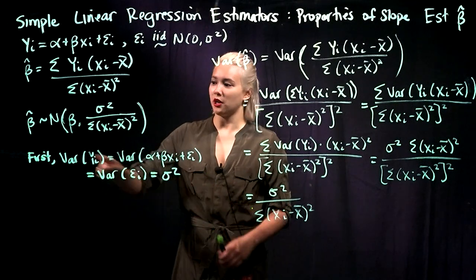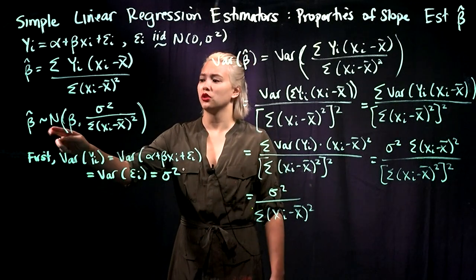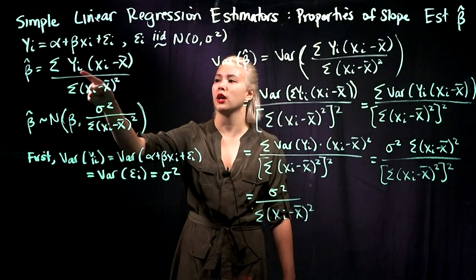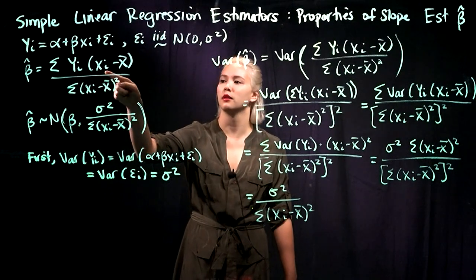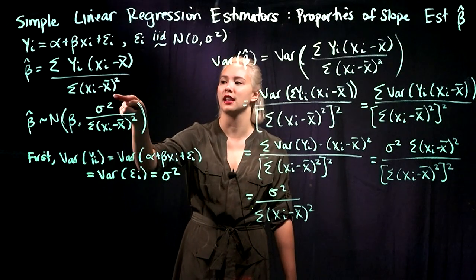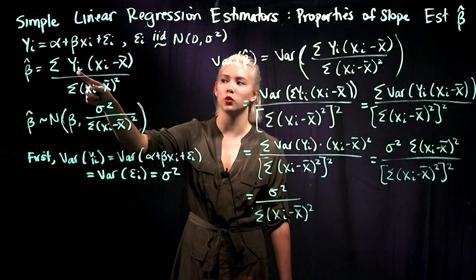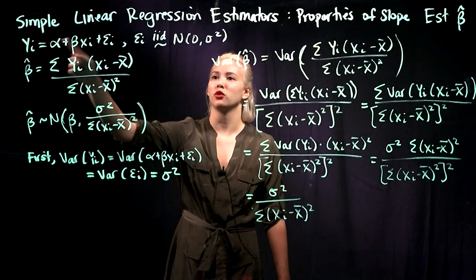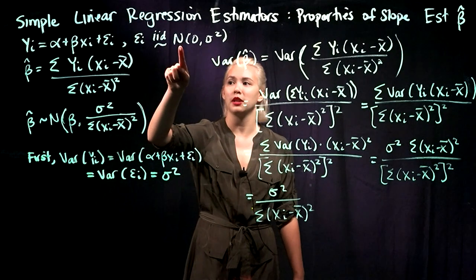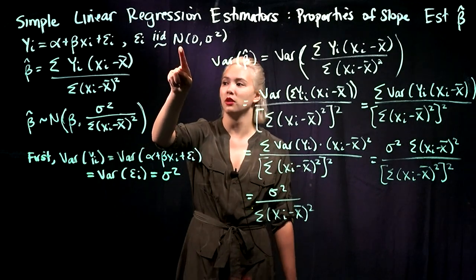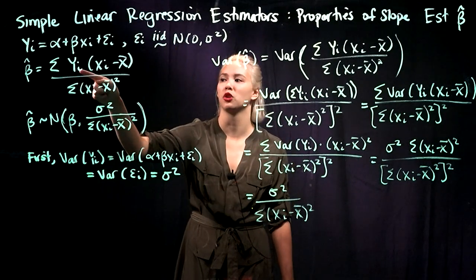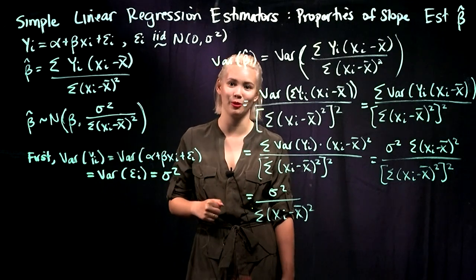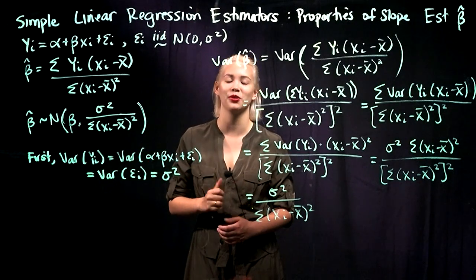The last thing to talk about is why beta hat is normally distributed. Looking back at beta hat, we have constants in the numerator, constants in the denominator, and then the yi terms. We know that the yi's are normally distributed because the epsilons are normally distributed. So if we're summing up a bunch of normally distributed random variables, we end up with a normally distributed random variable.